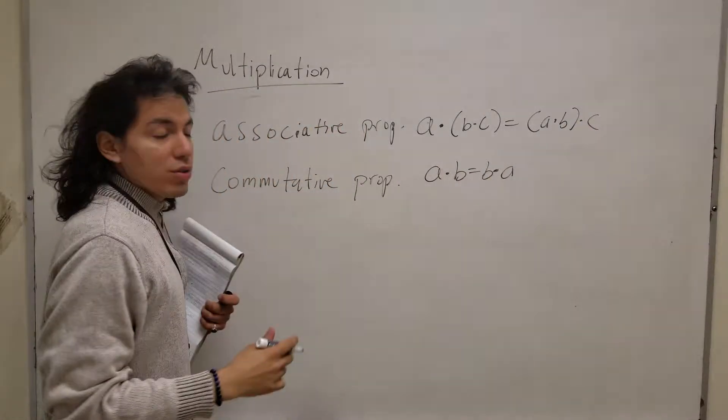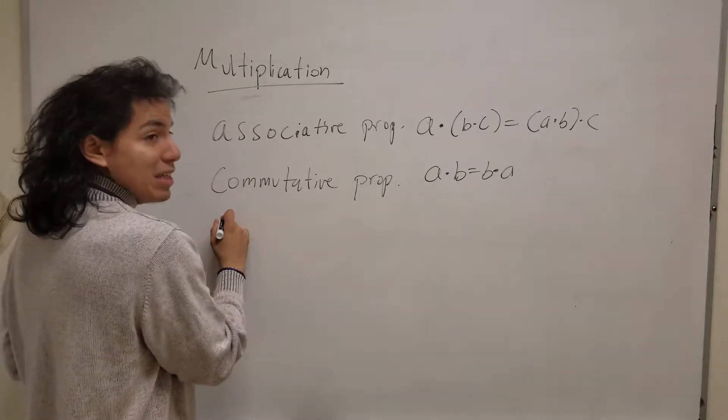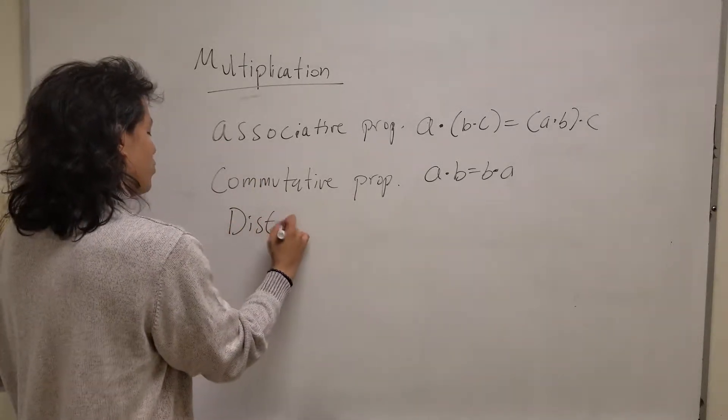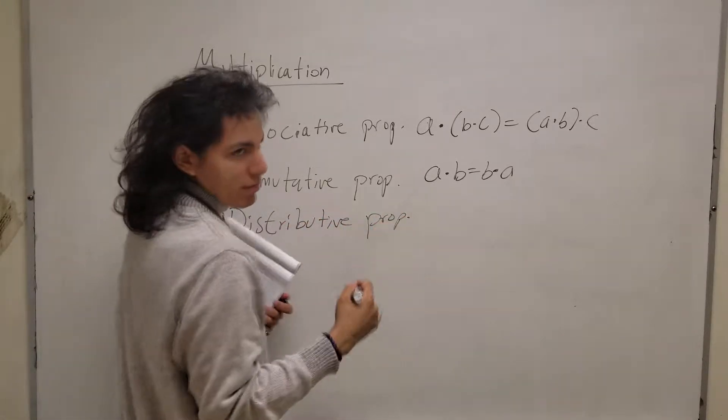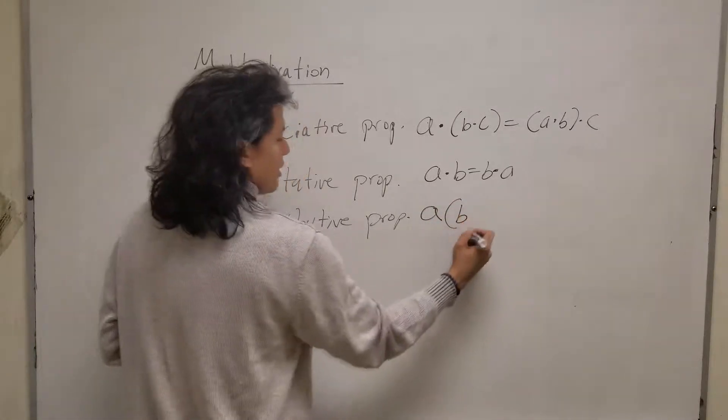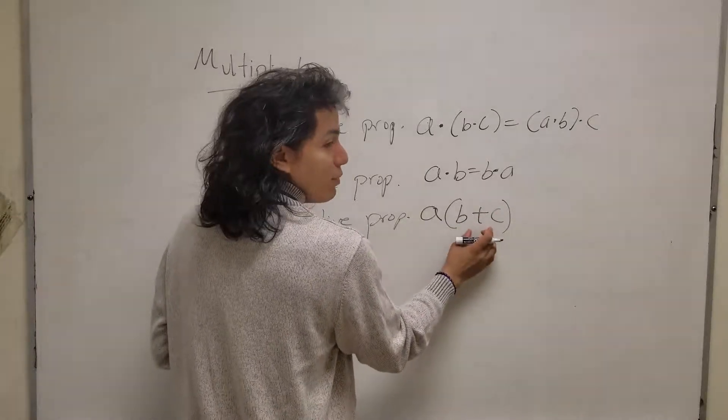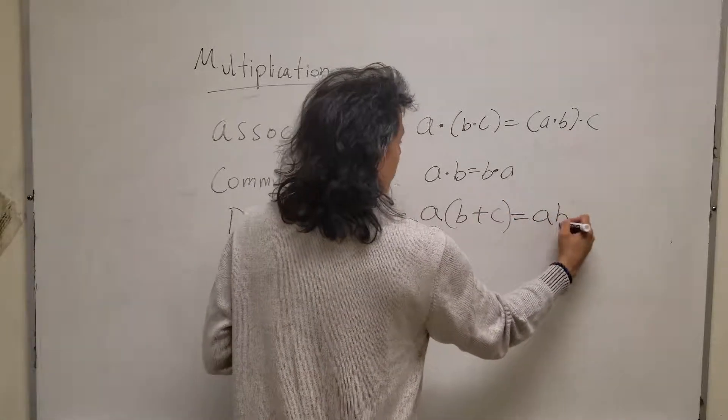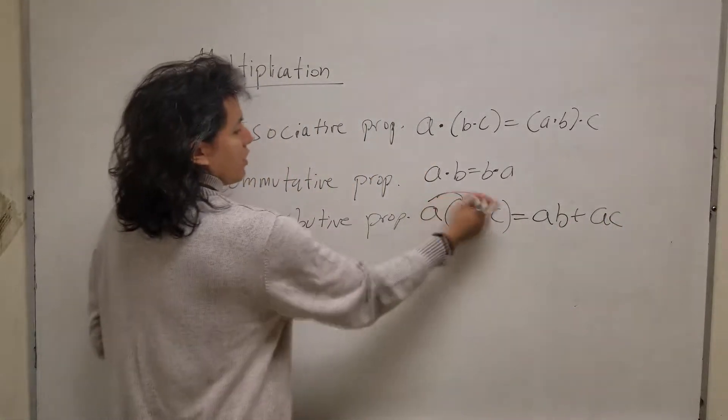Now what differentiates between multiplication and addition is multiplication has an additional property called the distributive property, which I'm pretty sure you've heard this term at one point or another in your life. I take any number A and I'm going to distribute this A into the sum of B and C here, so this is going to be AB plus AC because I'm distributing the term into both terms here.